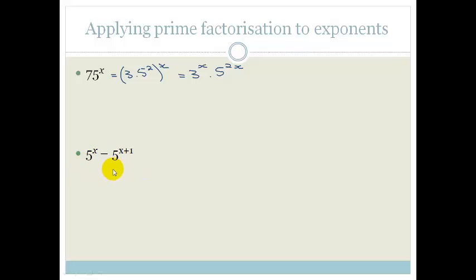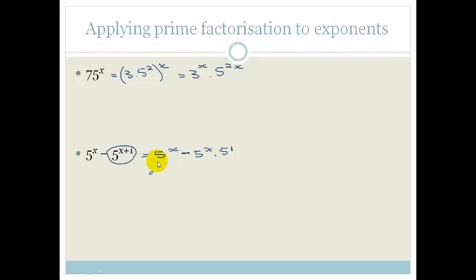Let's look at how we use factorization in exponents. We've got 5 to the x minus 5 to the x times 5 to the 1. Do you see we have a common factor of 5 to the x? We can take out a common factor of 5 to the x and we're left with 1 minus 5, which gives us minus 4 times 5 to the x.